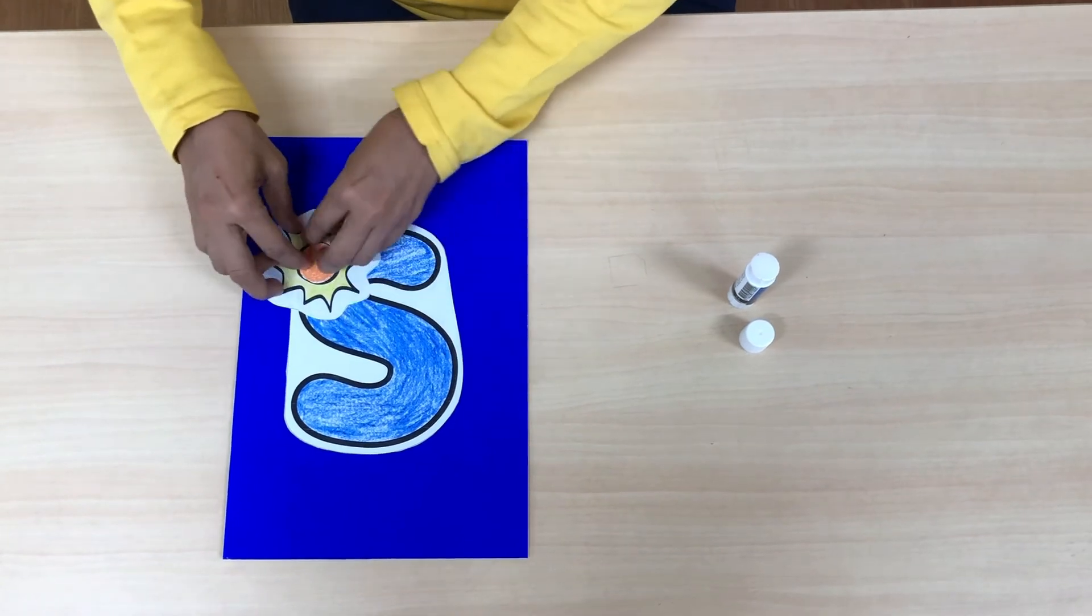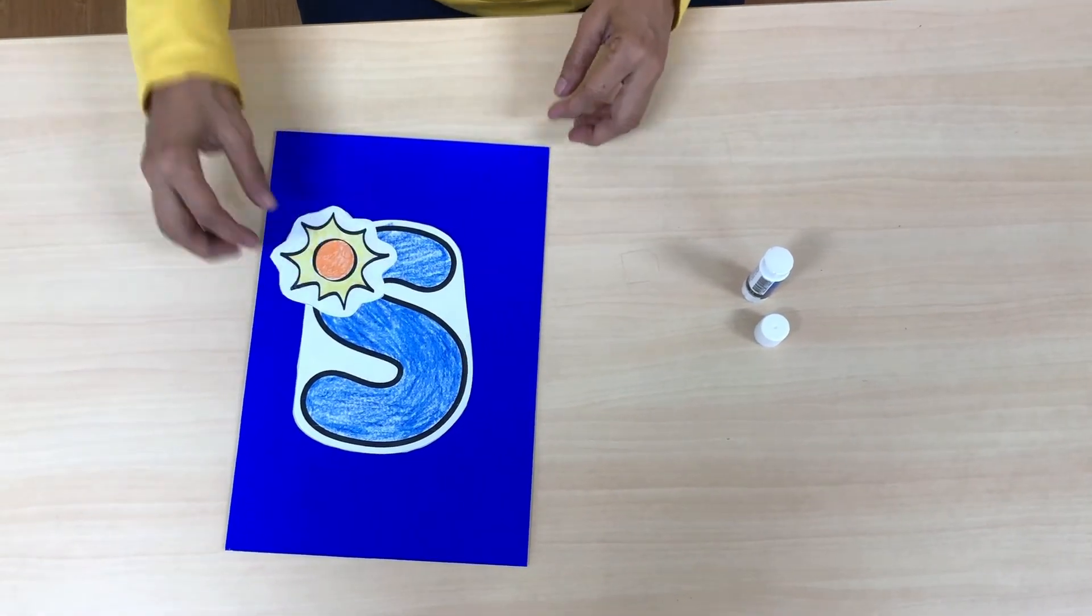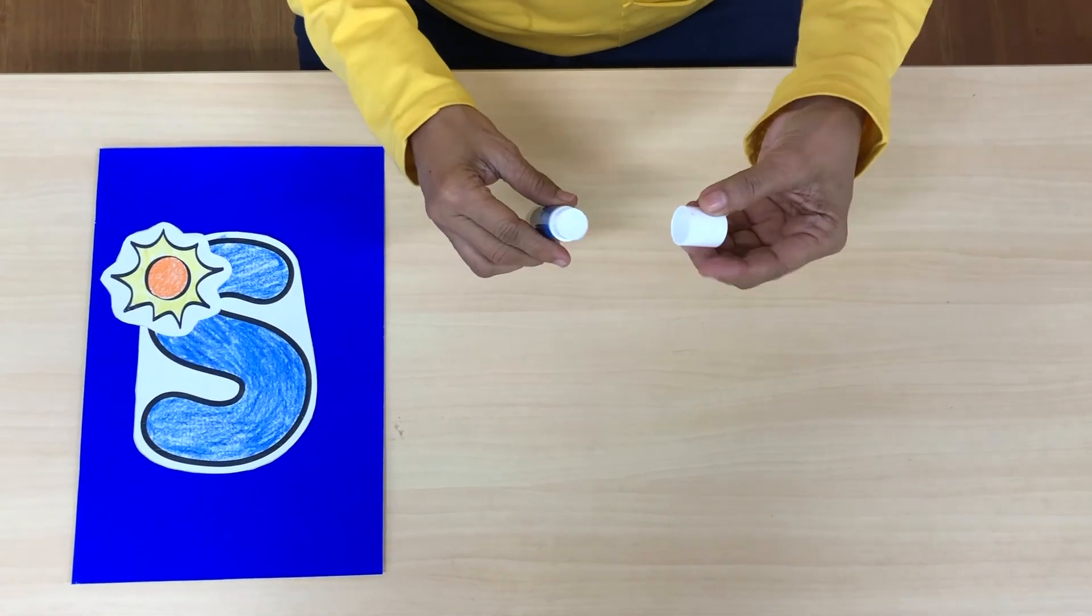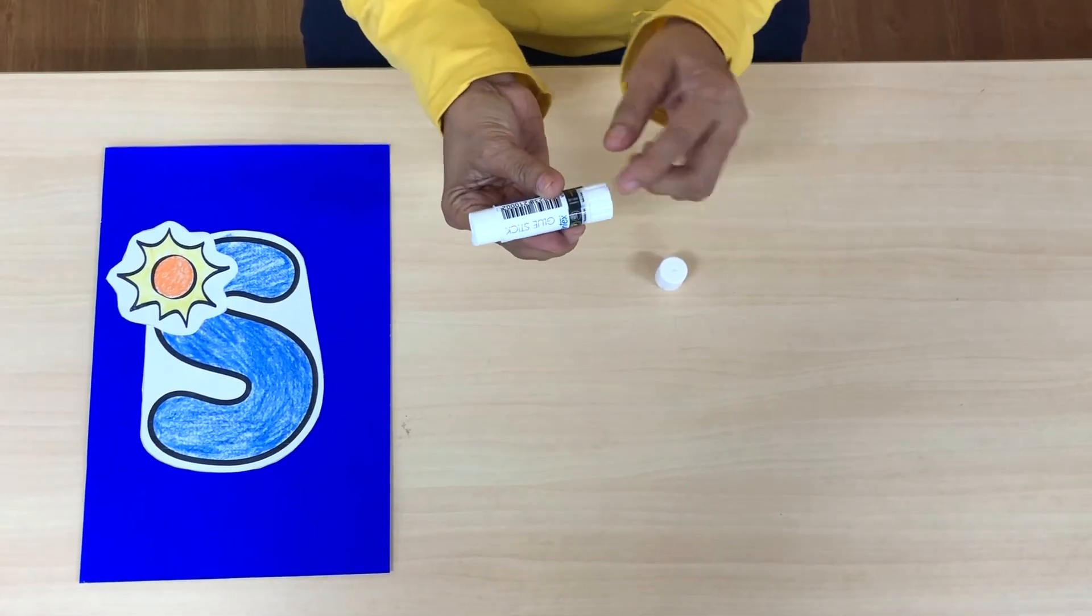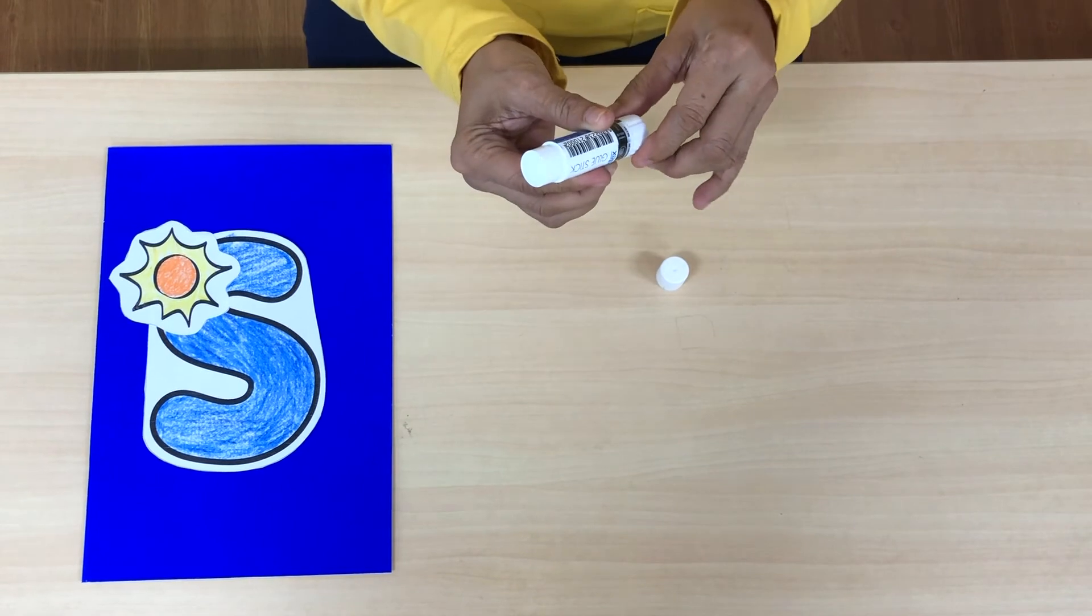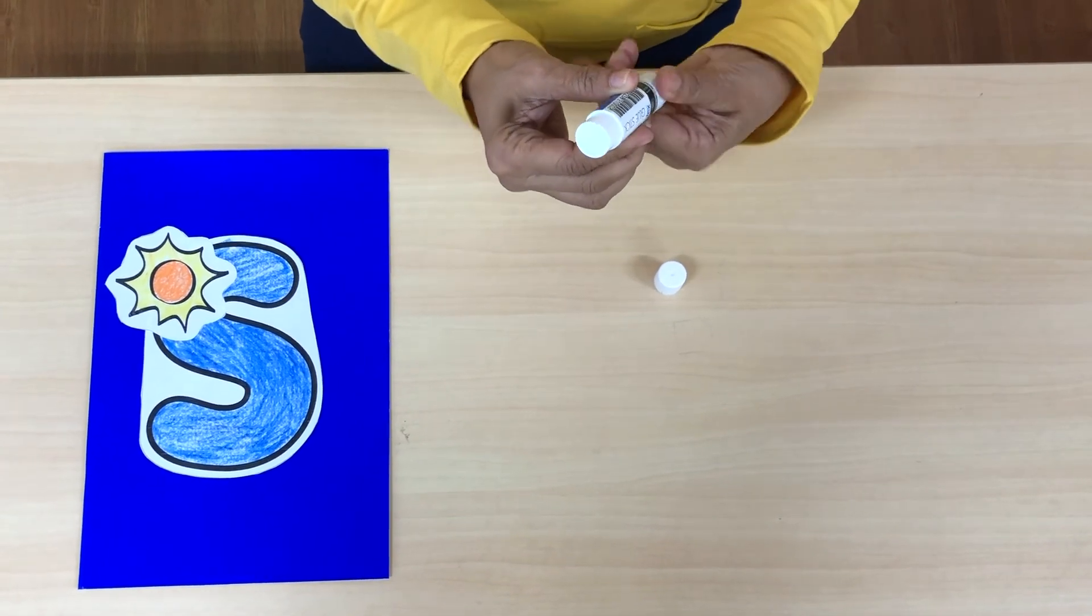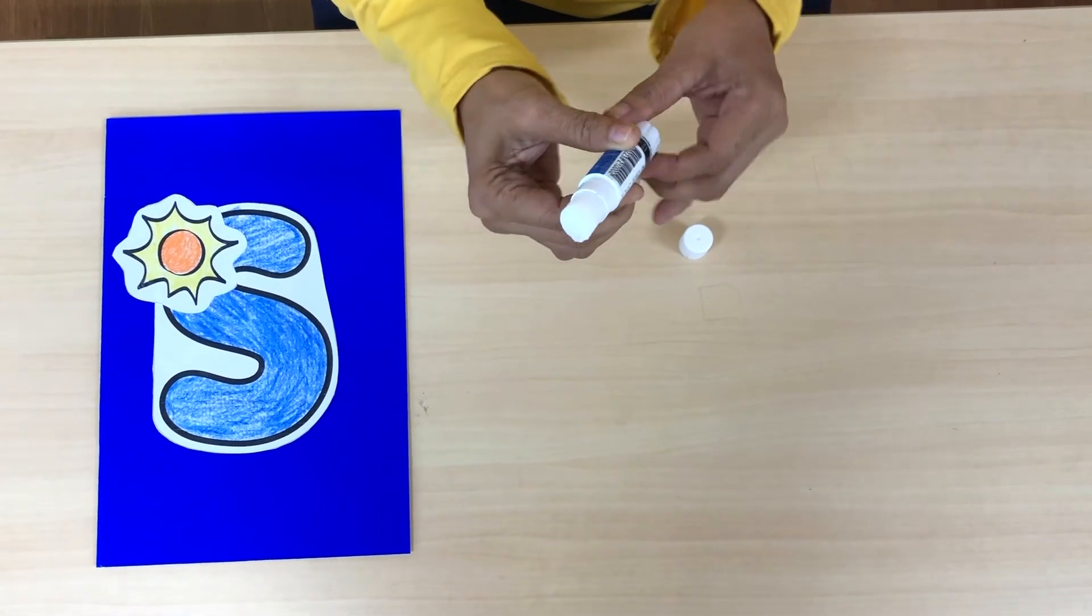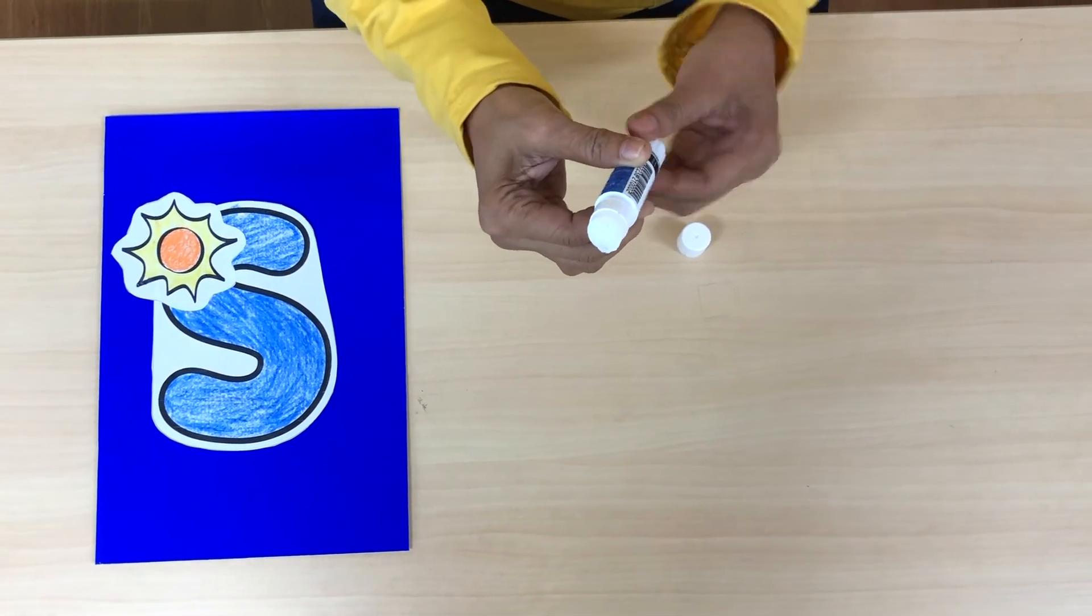This letter S, when you use glue first you can take off the lid, so like this. You can go around like this. Okay, not like this, not the big one, no, only little one like this.